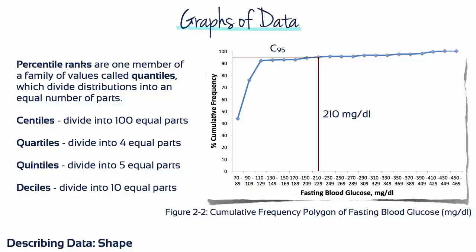Percentile ranks are one member of a family of values called quantiles, which divide distributions into an equal number of parts. Percentiles, or sometimes just called centiles, they divide into 100 equal parts. Quartiles divide into 4 equal parts. Quintiles divide into 5 and deciles divide into 10.